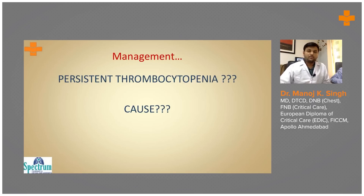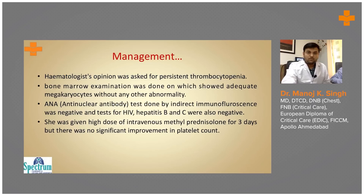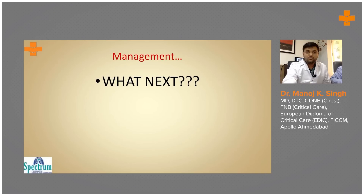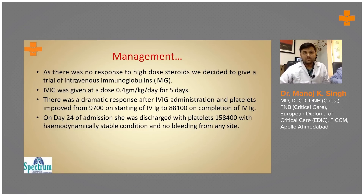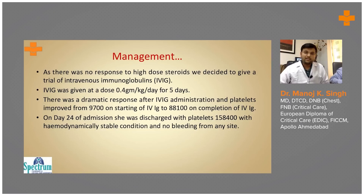We were left with persistent thrombocytopenia after a prolonged dengue fever. Usually in dengue, platelets start improving on day eight or nine, but this patient still had persistent thrombocytopenia after 15 to 18 days. We started a high dose of methylprednisolone for three days, but this did not improve the platelet count. We therefore decided to give a trial of intravenous immunoglobulin at 0.4 gram per kg per day for five days. There was a dramatic response after the first or second dose of IVIg, with platelets improving from 9,700 to 88,100.